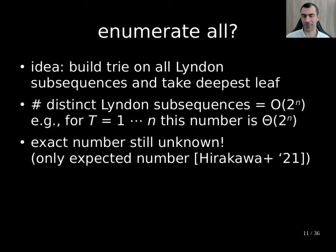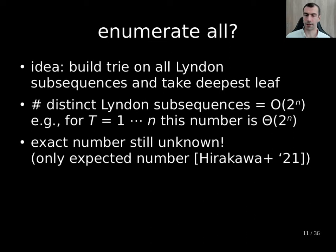Unfortunately, just building this trie can take exponential time, because the number of distinct Lyndon subsequences can be exponential — and that bound is tight. If you look at an input string like T equals 1 up to n, where these are character ranks, then you get a tight bound. Actually, how to compute this number efficiently is unknown; we only know the expected number due to a paper from last year.